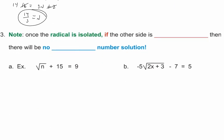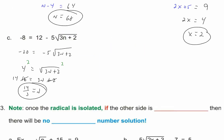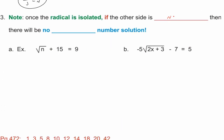All right. Everybody good? Let me remind you of one thing. Note, once the radical is isolated, if the other side is negative, there will be no real number solution. There will be no real number solution. First example. Would you agree we'd move the 15 by adding a negative 15 to both sides? When we do, we get the square root of n equals negative 6. When you take the square root of something, can you end up with a negative? And the answer is no.